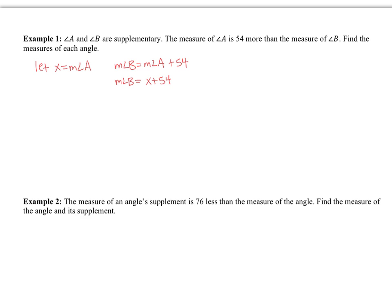We know that the measure of angle A plus the measure of angle B is equal to 180. When you're working with the equation you don't have to put degrees, but at the very end for your final answer you need to put degrees. These are formal statements that need to be made, especially when we get into proofs, so getting in the habit of doing that is really good practice.